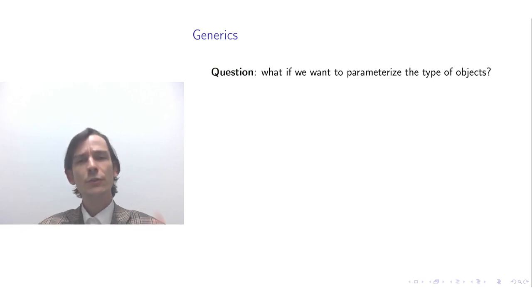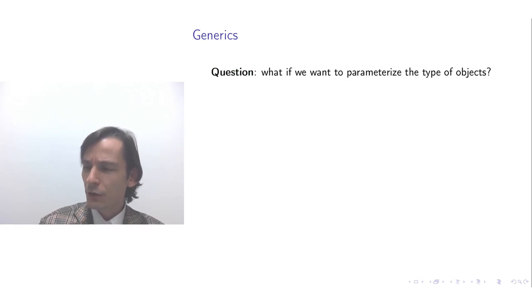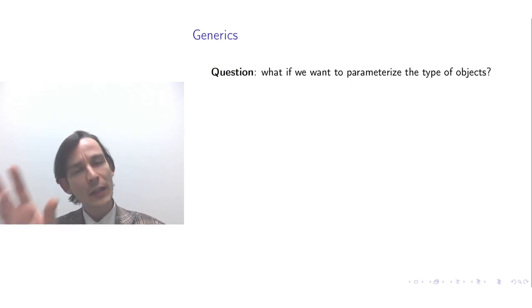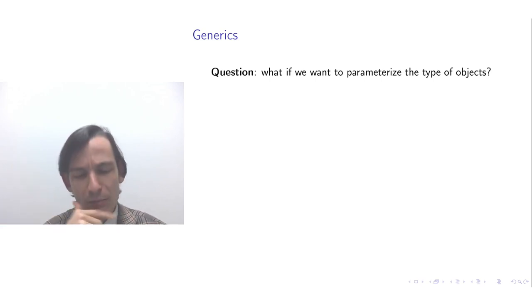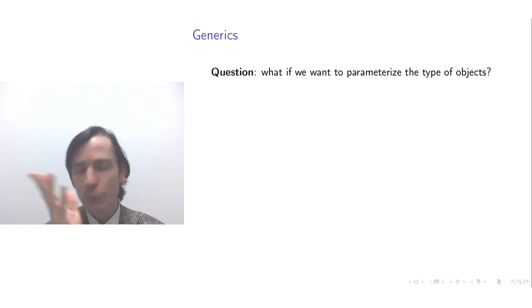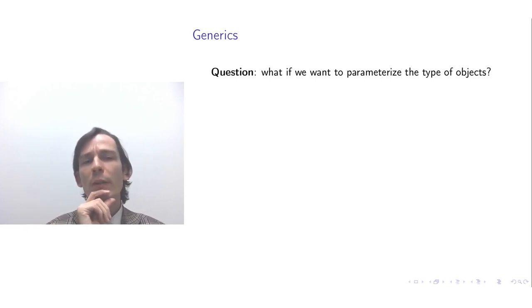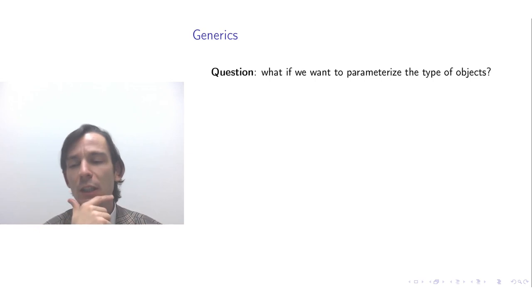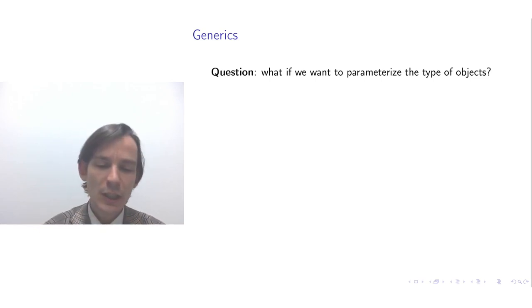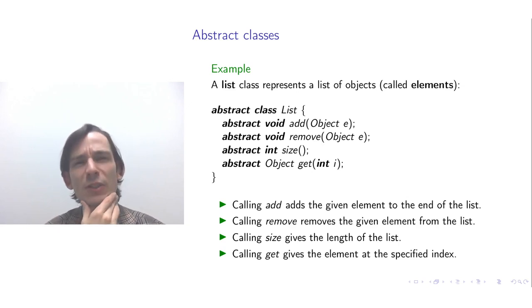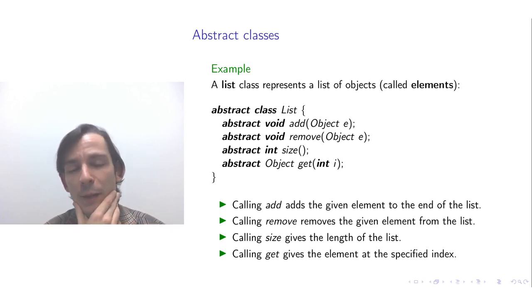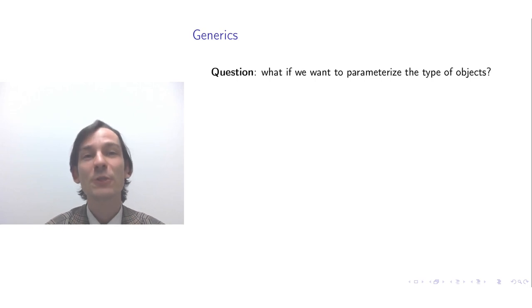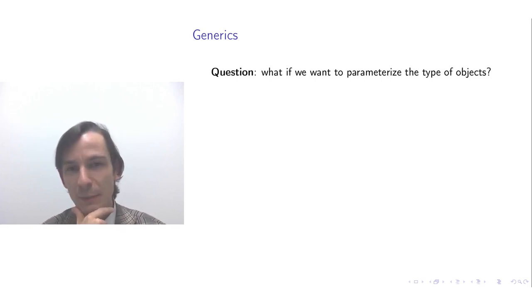We could ask: you just saw a list in which you can add, remove, and get objects, and the object class is the root of the class hierarchy. But what if we want lists not of objects, but specifically of persons or animals? We could duplicate the list abstract class for each possible reference type, but that takes a lot of duplication. So let me introduce you to generics — a way to parameterize the class declaration by introducing type-level parameters.